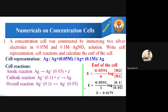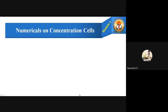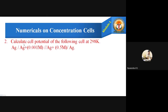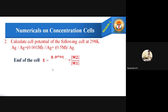Let us move to the second problem: calculate the cell potential of the following cell at 298 K — Ag | Ag⁺ (0.001 M) ‖ Ag⁺ (0.5 M) | Ag. This is a similar type of problem. Since they only ask to calculate the cell potential, we directly use the formula E = 0.0591 / n × log(M2 / M1).